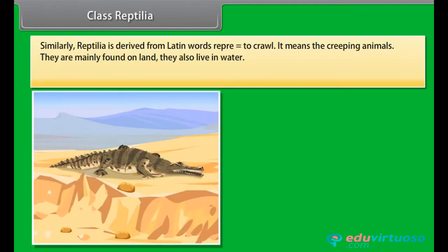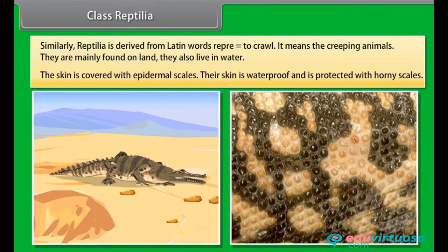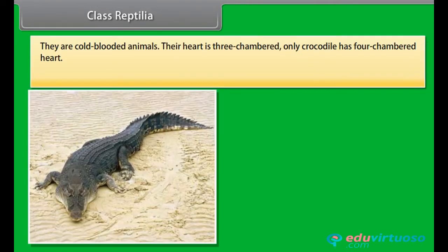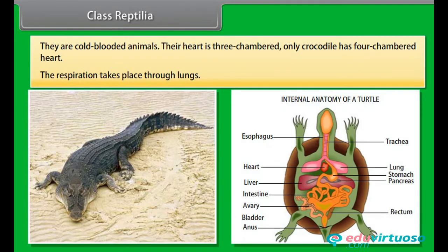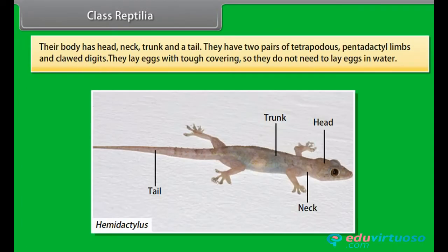Reptilia is derived from Latin word repere, meaning to crawl — the creeping animals. They are mainly found on land but also live in water. The skin is covered with epidermal scales and is waterproof, protected with horny scales. They are cold-blooded animals. Their heart is three-chambered; only crocodile has a four-chambered heart. Respiration takes place through lungs. Their body has head, neck, trunk, and a tail. They have two pairs of tetrapodous pentadactyle limbs with clawed digits.